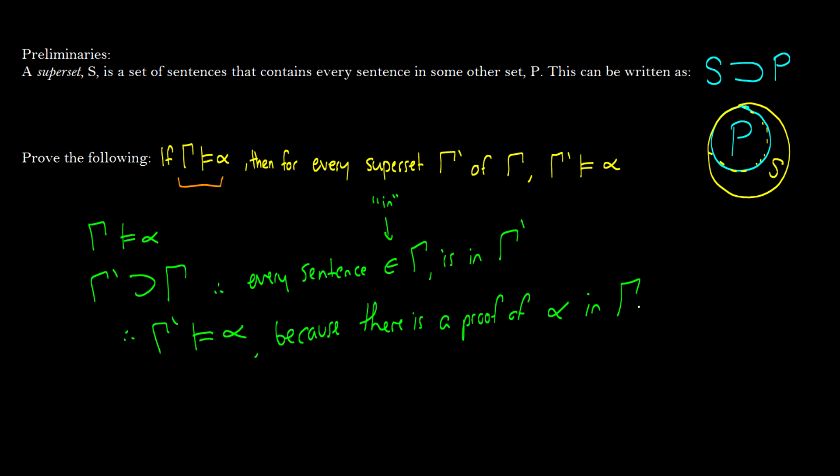So, because gamma prime contains gamma, and alpha is proved in gamma, the bigger set also proves alpha. So, entails is really the word I should be saying, but I think it's fairly intuitive.